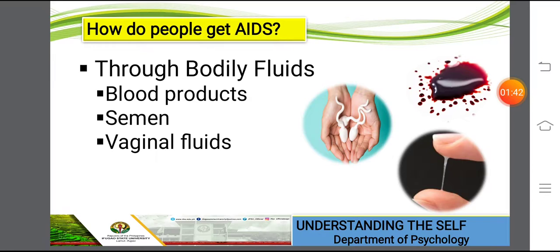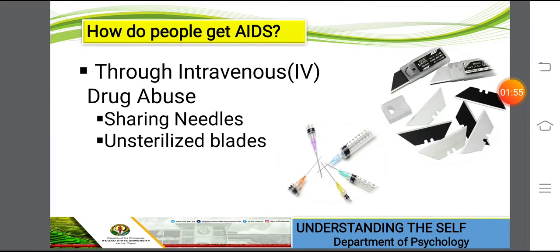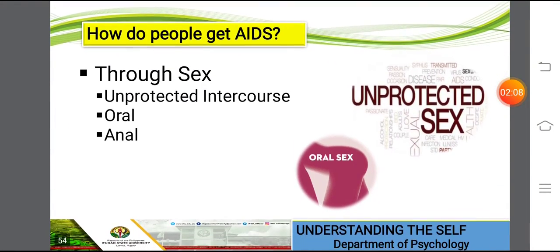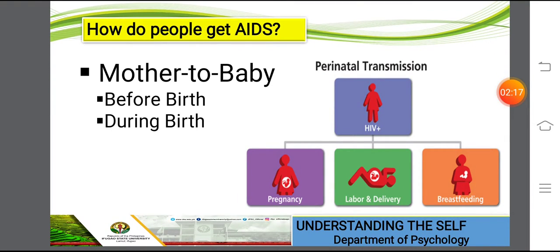How do people get AIDS? First is through bodily fluids — blood products, semen, and vaginal fluids. Through intravenous drug abuse, sharing needles, and unsterilized blades as well. Through sex, especially if unprotected — oral or anal. And through mother to baby, before birth and during birth, because blood and bodily fluids are transmitted from mother to baby.